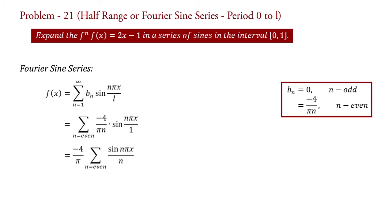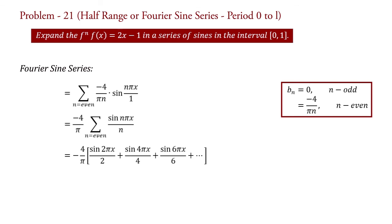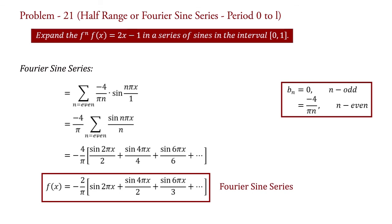In expanding form, it is written as f(x) = -(4/π)[sin(2πx)/2 + sin(4πx)/4 + sin(6πx)/6 + ...], here taking n = 2, 4, 6, etc. This is the required series of the given function.